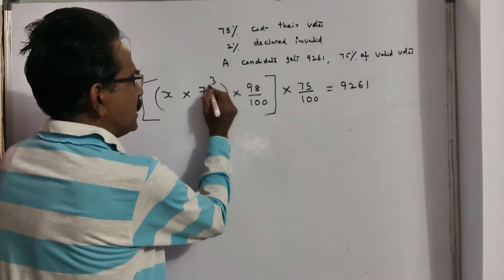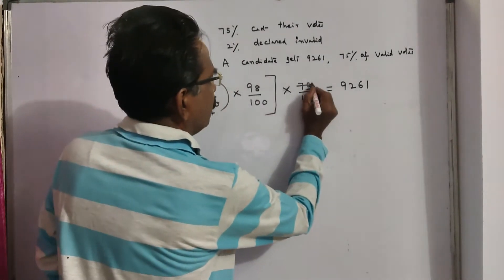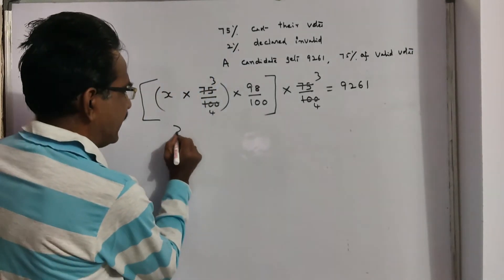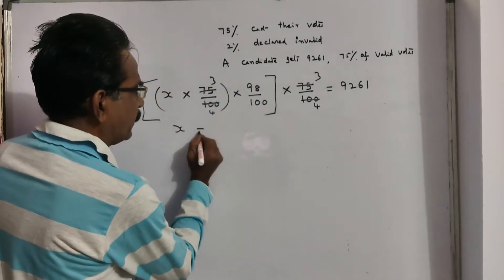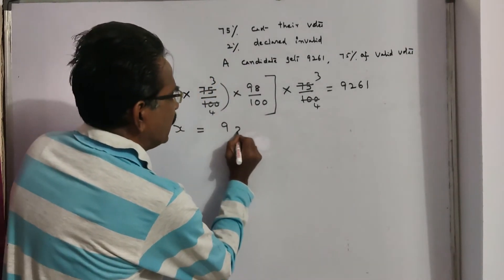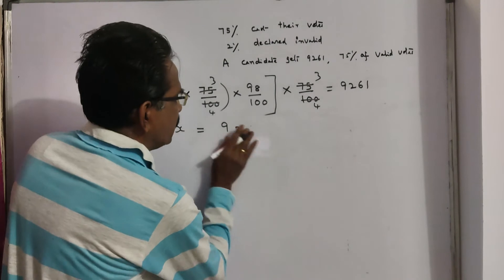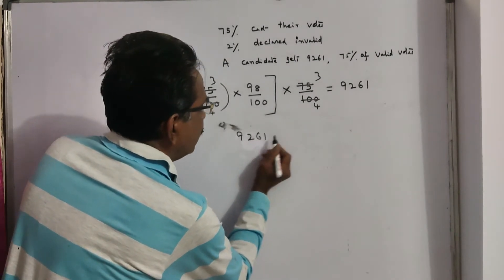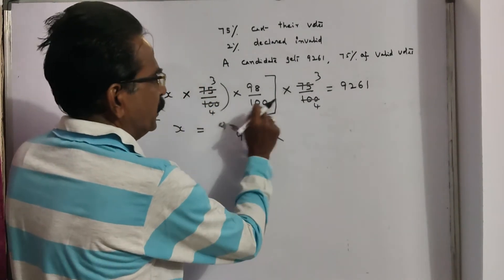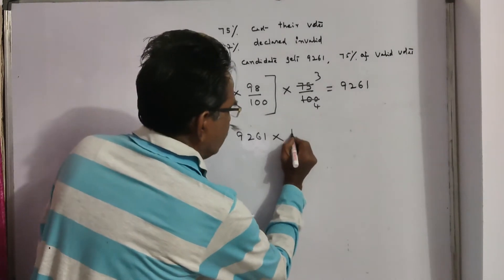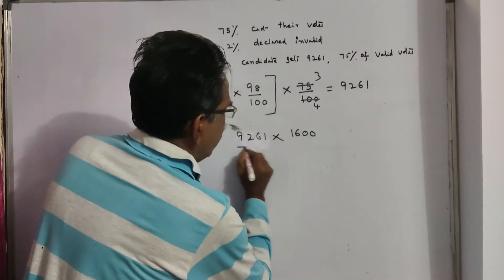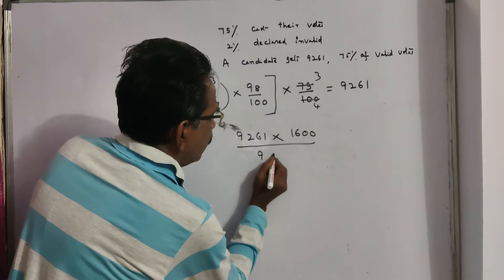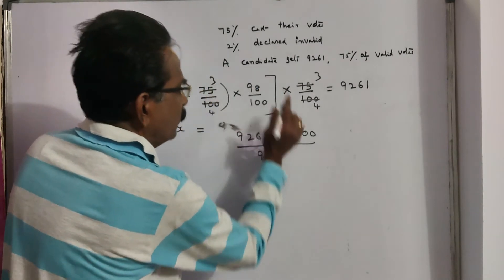Now let us find X to get the number of votes enrolled. We have: 9,261 = (75/100) × (98/100) × (75/100) × X. Rearranging: X = 9,261 × 4 × 4 × 4 × 100 × 100, divided by 3 × 3 × 98.